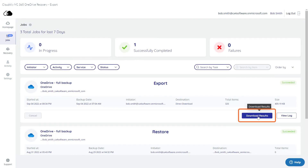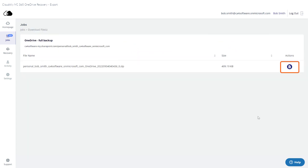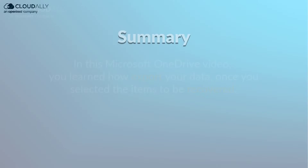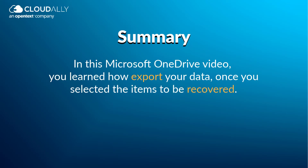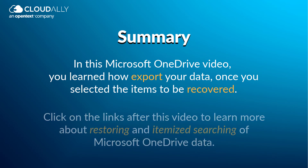Click the Download Results button and a page will open where you can access a zip file with the exported items. In this Microsoft OneDrive video, you learned how to export your data once you selected the items to be recovered. Click on the links after this video to learn more about restoring and itemized searching of Microsoft OneDrive data.